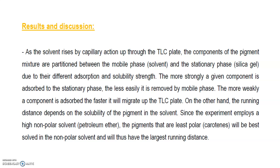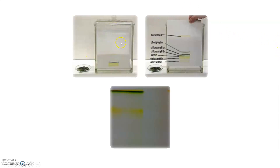For results and discussion: as the solvent rises by capillary action up the TLC plate, the components of the pigment mixture are partitioned between the mobile phase solvent and the stationary phase silica gel due to their different absorption and solubility. The more strongly a component is absorbed to the stationary phase, the less easily it is removed by the mobile phase. The more quickly a component is absorbed, the faster it will migrate up the TLC plate. The running distance depends on the solubility of the pigment in the solvent. Since the experiment uses a highly non-polar solvent, the least polar pigments — the carotenes — will be best dissolved in the non-polar solvent and will thus have the largest running distance. You can see the TLC chamber setup with the stationary phase and mobile phase.